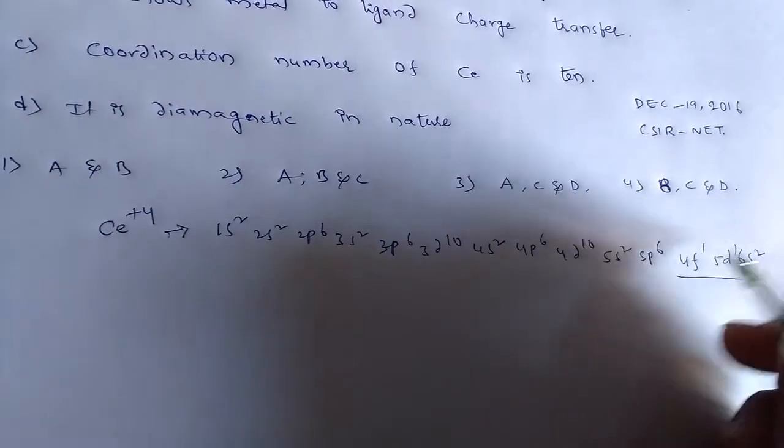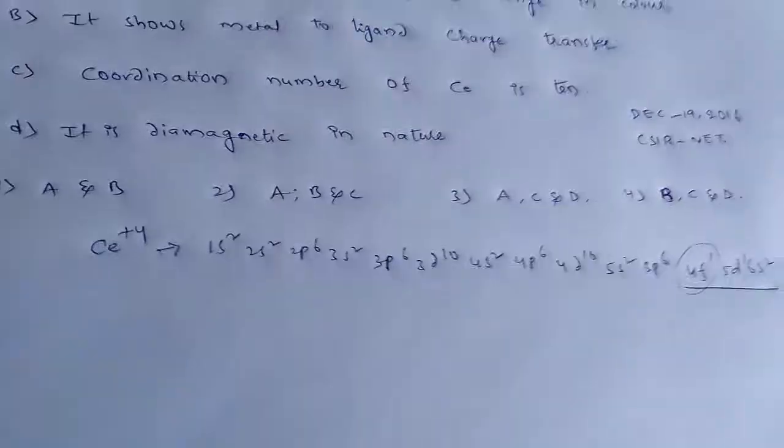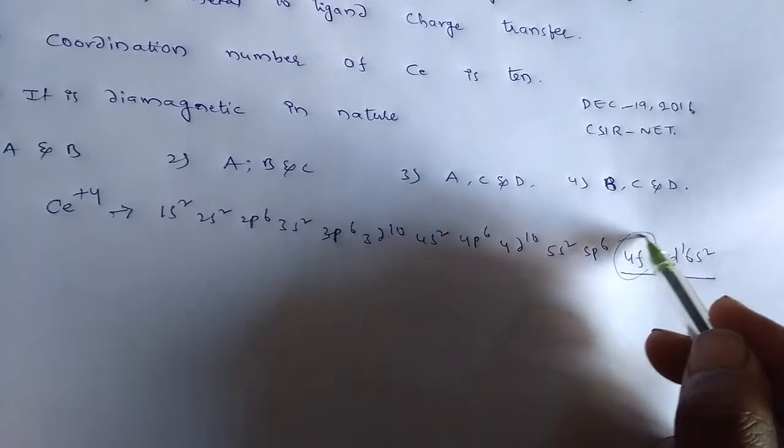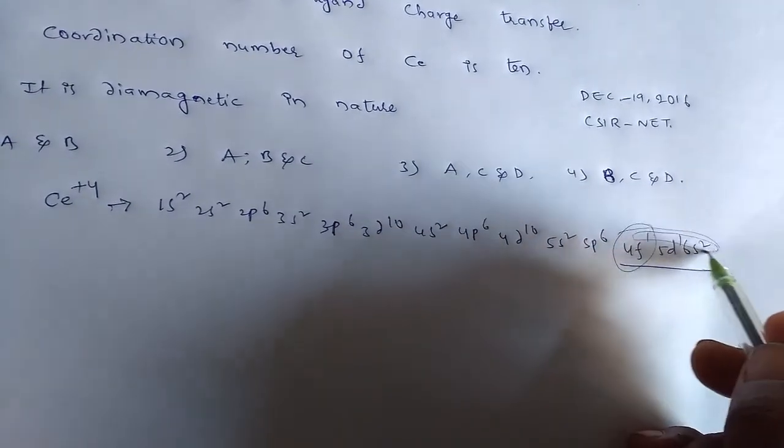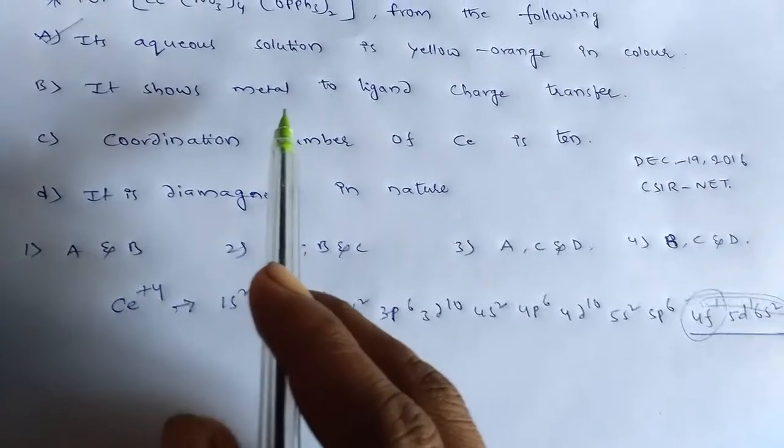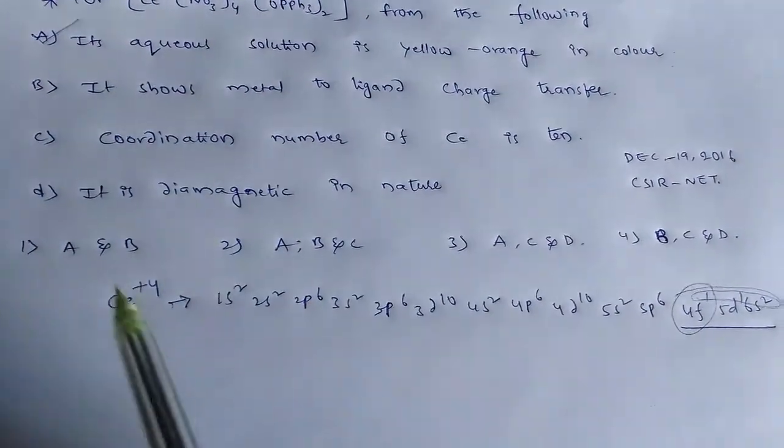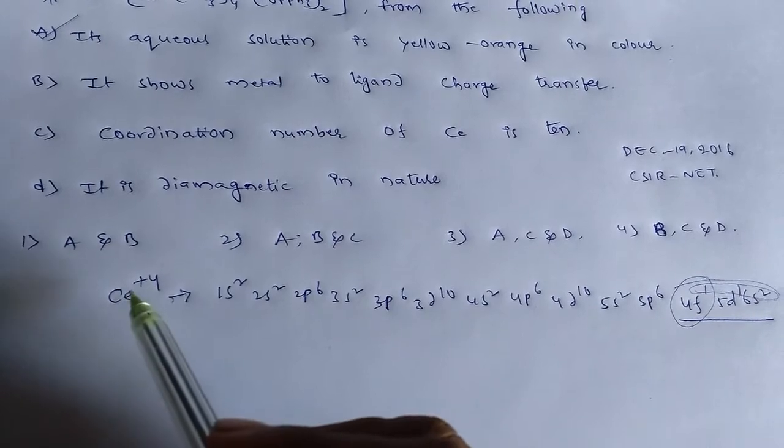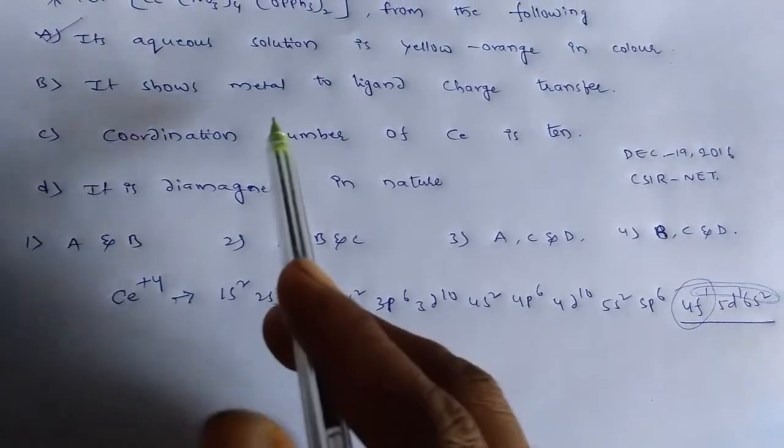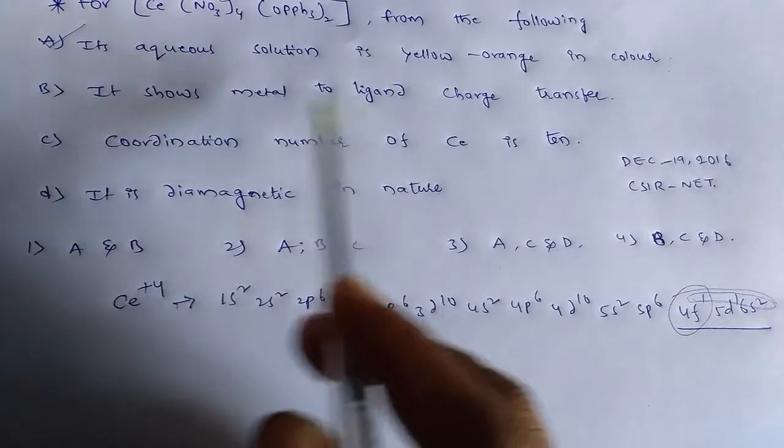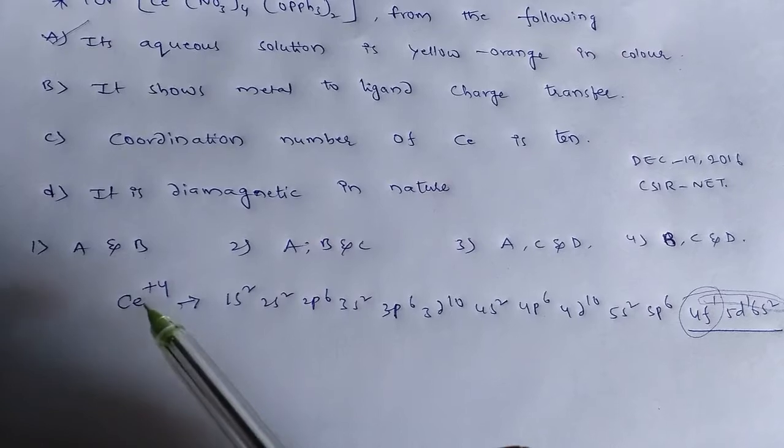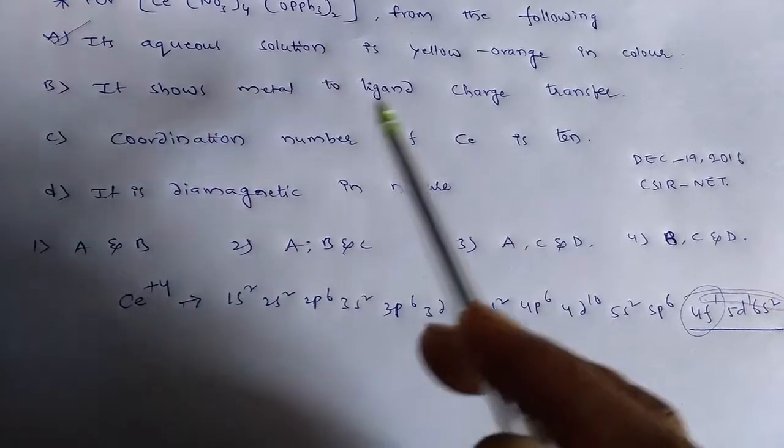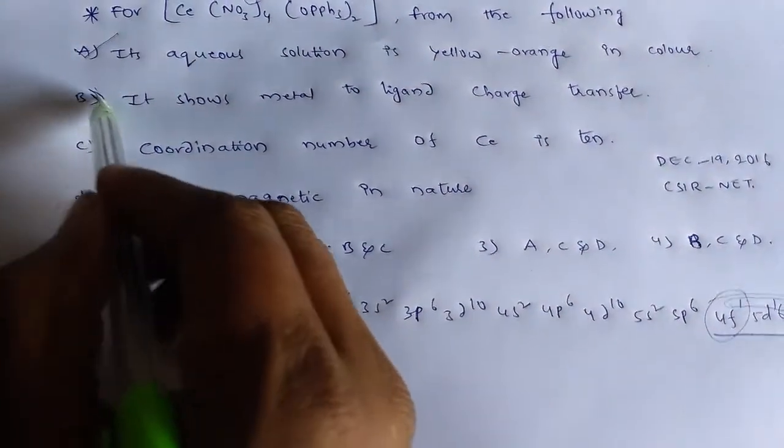So this is the 4f electron. This is electronic configuration of cerium. And in its plus 4 oxidation state it loses 4 electrons. Hence to show metal to ligand charge transfer, metal should have less oxidation state and more electrons in the cerium. Then only it is possible to transfer charge from metal to ligand. But here cerium is in its highest oxidation state. So there is no chance of transfer of charge from metal to ligand. So option B is wrong.